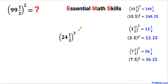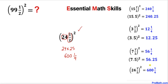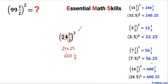In this next example let's focus on twenty four. Twenty four times the next number, twenty five, gives us six hundred. Let's take care of this one half squared, which is one fourth. So the answer turns out to be six hundred and one fourth, and in terms of decimals, six hundred point two five.